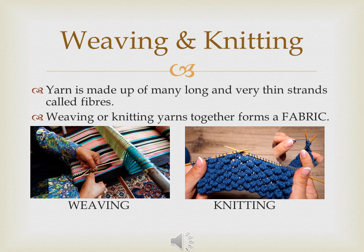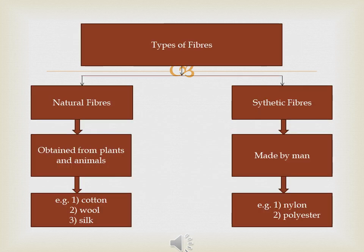There are two types of fibers: natural fibers and synthetic fibers. Natural fibers are obtained from either plants or animals — for example, cotton, wool, and silk. Fibers that are not found naturally and are made by man are called synthetic or man-made fibers — for example, nylon and polyester.